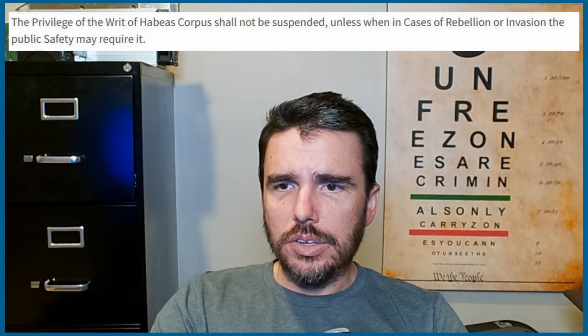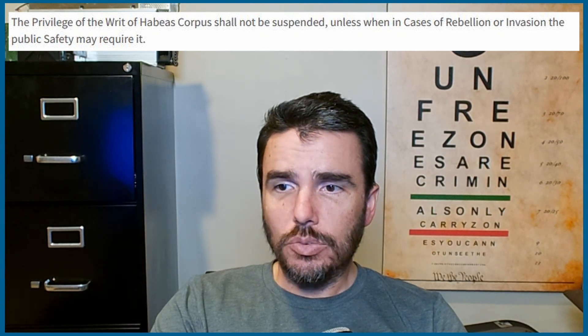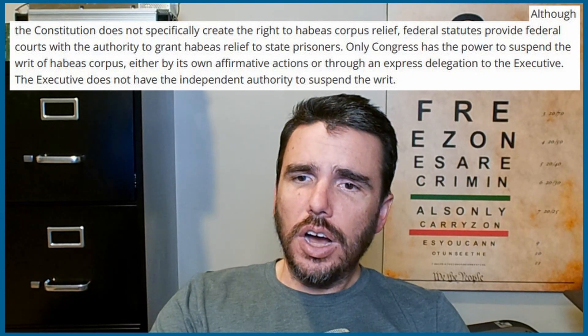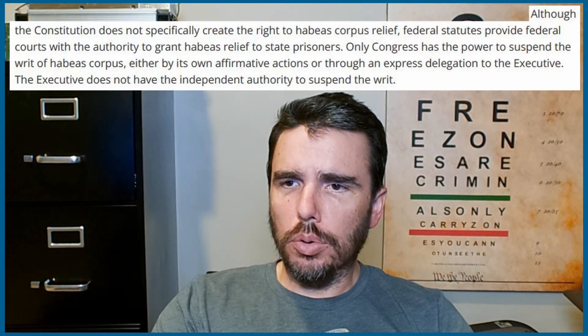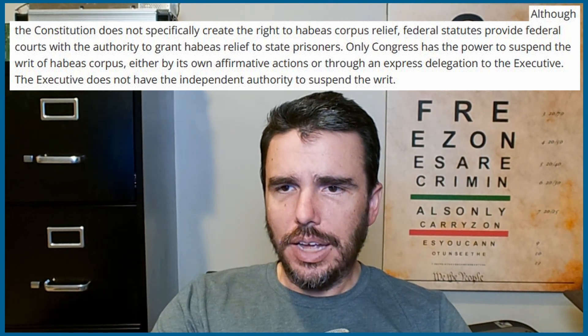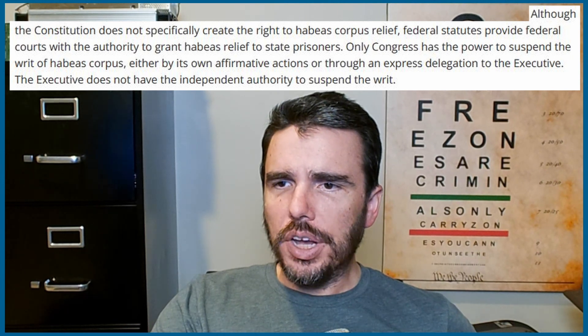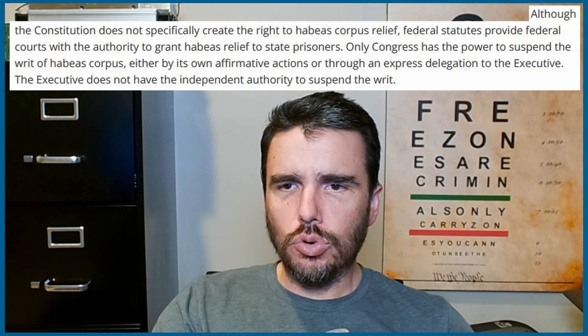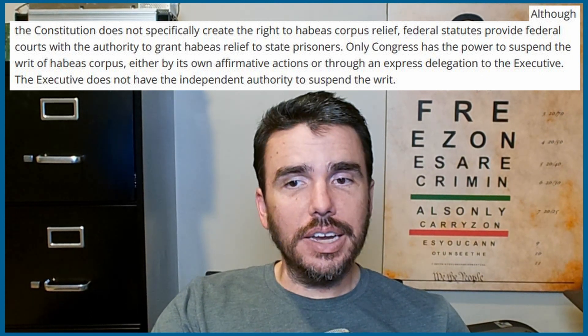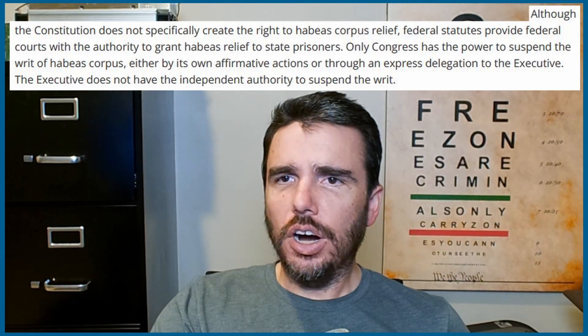Section Nine addresses individual protections and congressional restrictions. The privilege of the writ of habeas corpus shall not be suspended unless in cases of rebellion or invasion where public safety requires it. Although the Constitution does not specifically create the right to habeas corpus relief, federal statutes provide federal courts the authority to grant relief to state prisoners. Only Congress has the power to suspend the writ — the executive does not have independent authority to suspend it on its own.